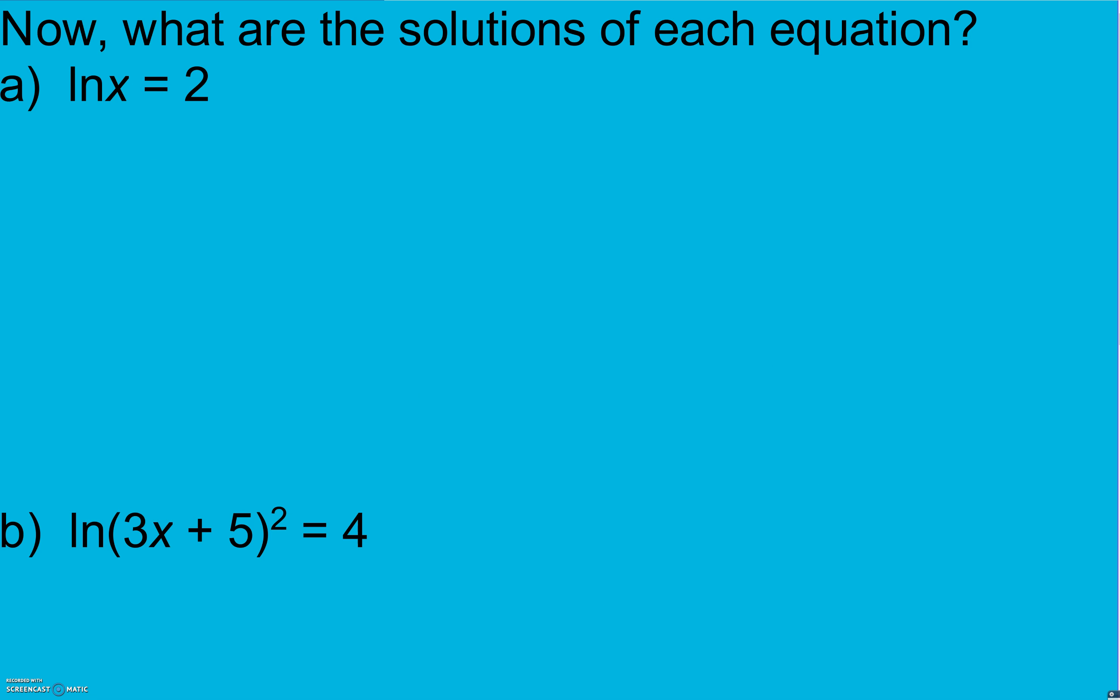Okay go ahead and try it. We have a variable in our logarithm and the only way we can solve that is if we switch to exponential form. So I'm going to take my base which is e to the second power equals x. Remember anytime I have ln my base is e, every single time. This you can type in your calculator: second ln gives you your e raised to the second power and we get approximately 7.389.